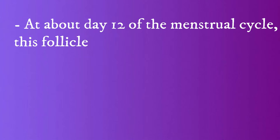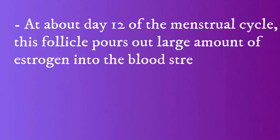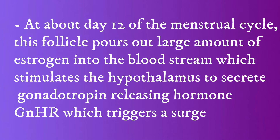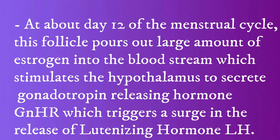At about day 12 of the menstrual cycle, this follicle pours out a large amount of estrogen into the bloodstream, which stimulates the hypothalamus to secrete gonadotropin-releasing hormone, GnRH. This hormone triggers a surge in the release of luteinizing hormone, LH.